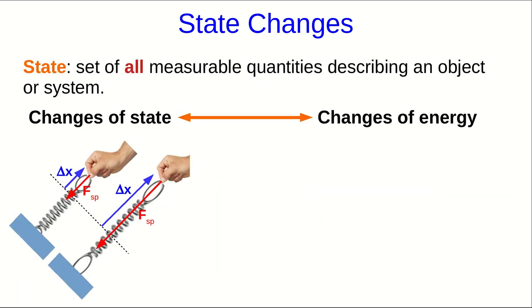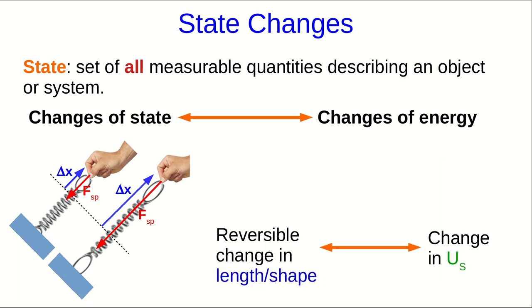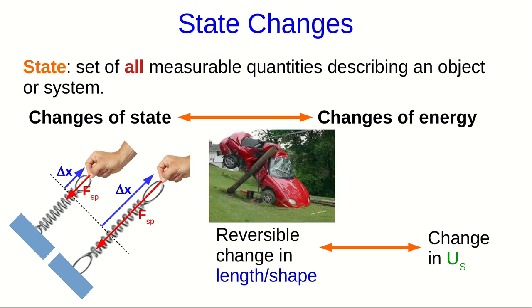Another state change associated with an energy change that we have seen is with springs. Reversible changes in length or shape are associated with spring potential energy. Notice this word reversible. If you have a situation like this car where it has clearly gone through an irreversible change in its shape, that is not associated with spring potential energy. That would be associated with another form of energy that we'll talk about more later, thermal energy.